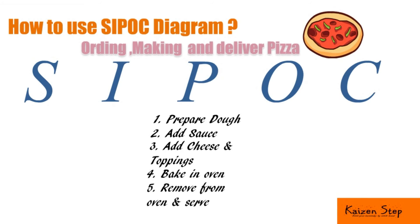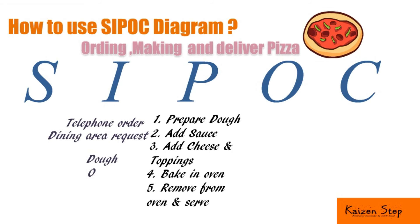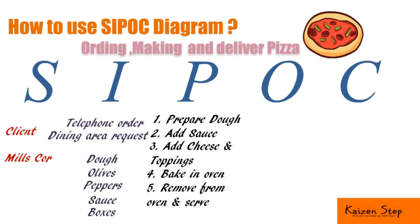Going backward to identify the inputs for this process, we find: telephone order, dining area request, olives, peppers, sauce, and boxes. The corresponding suppliers are: Client, Mills Corporation, Farmers Corporation, Marco Market, and Print Inc.